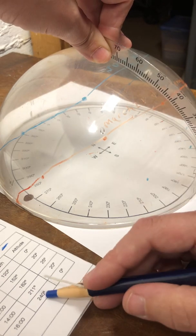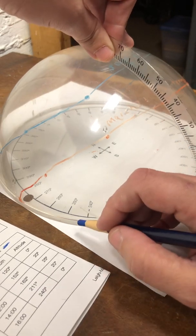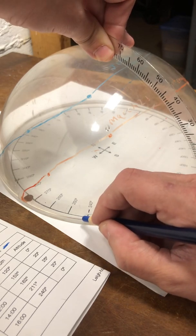And then my last one, azimuth 240, that's right there. And it's altitude 0, so it's right at the horizon.